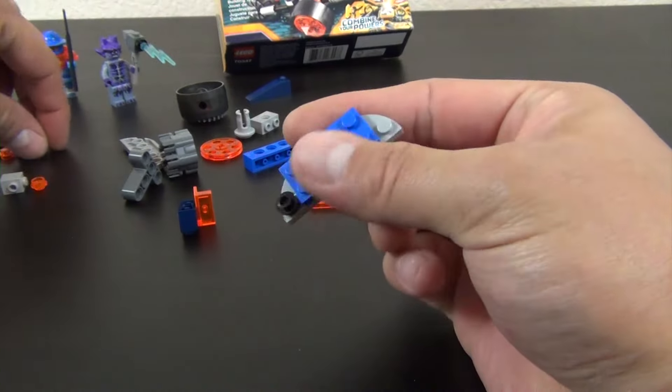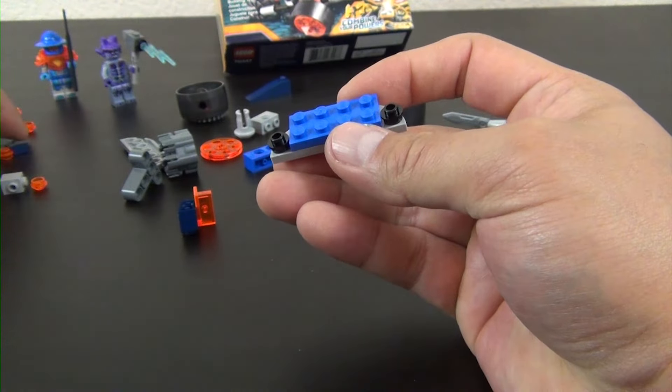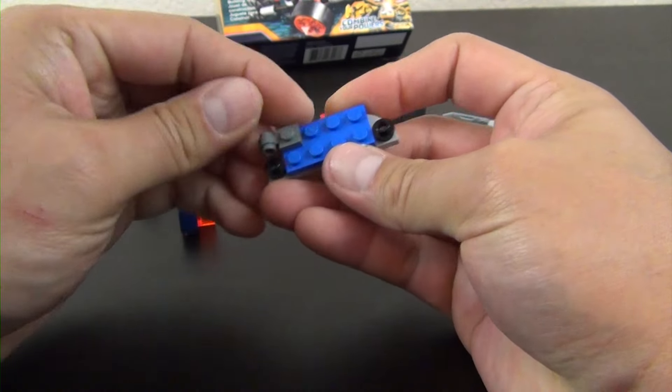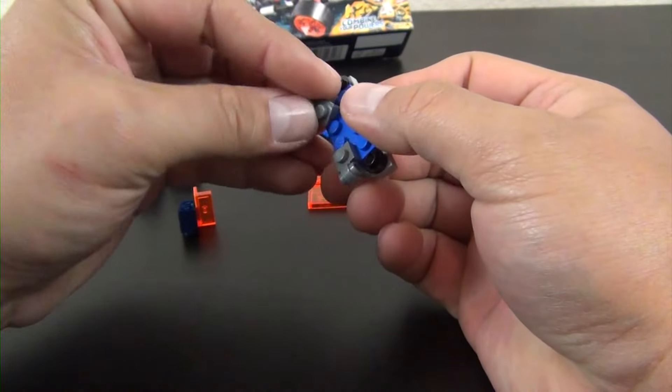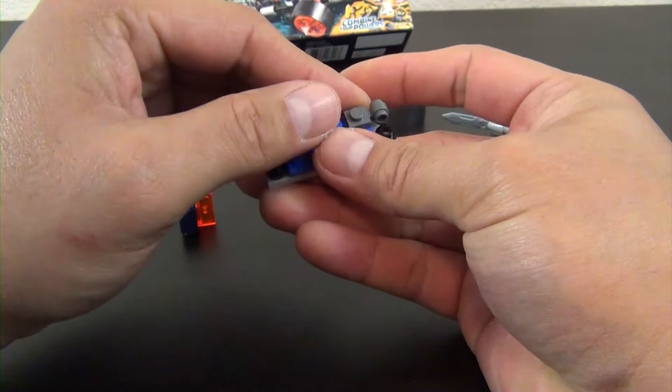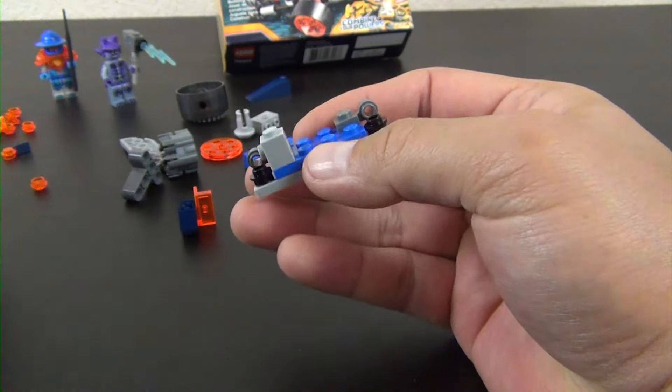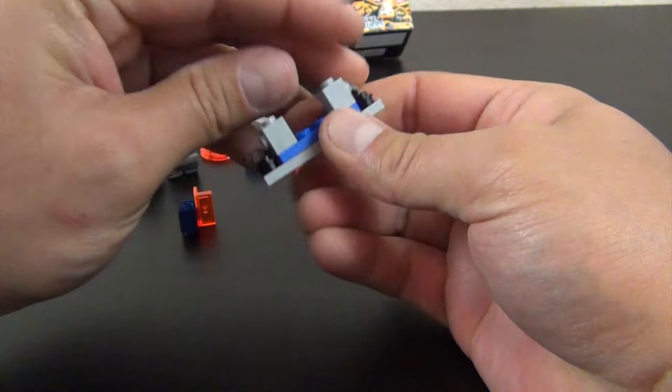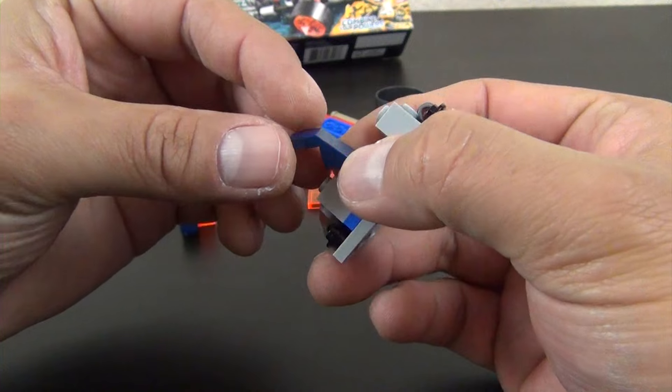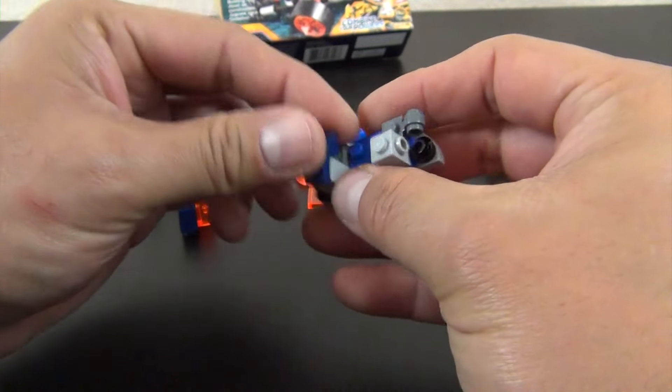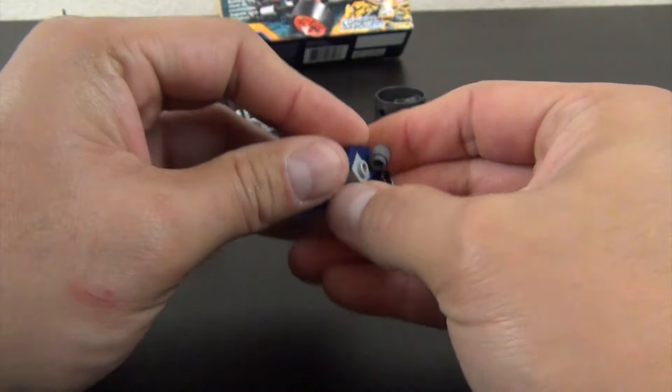As of right now I'm guessing, but that's why we build these sets so we can actually see the progression of how it's put together and the thought process that went into it. All right, we have a couple one by one bricks with studs on the side. These are the newer style 45 degree slope with the tile on the top. Those will both go there.